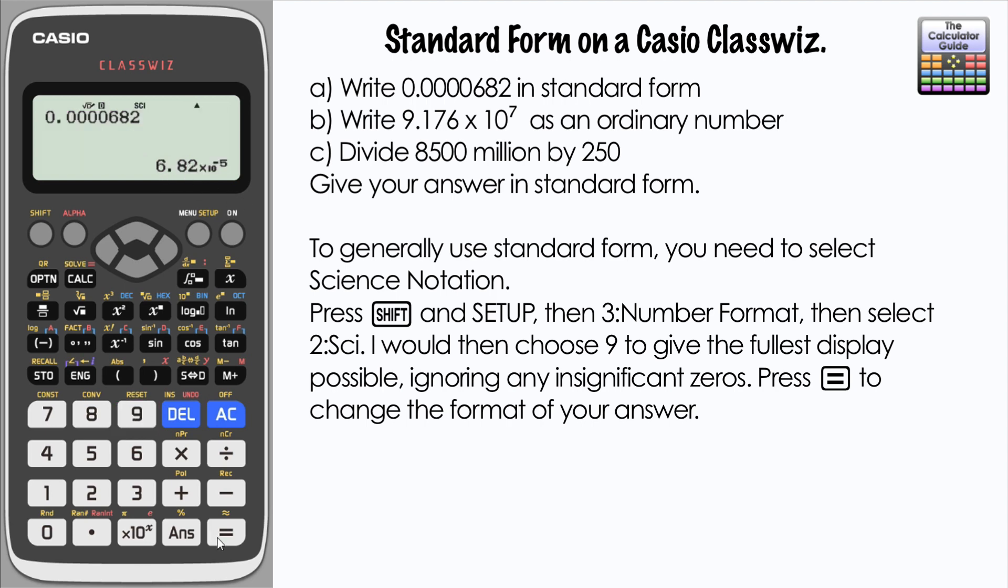So if you just choose 9 and press equals, this is how it would appear in scientific notation. Again we've got these insignificant zeros here we can just ignore them when we give our answer: 6.82 times 10 to the minus 5.